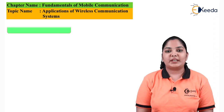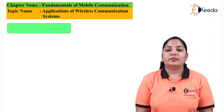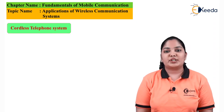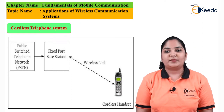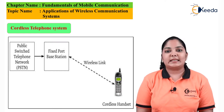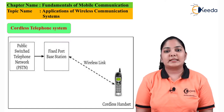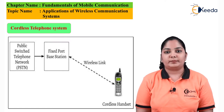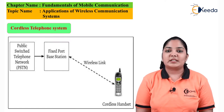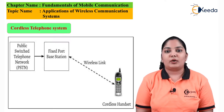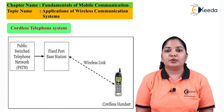The first application of the wireless communication system is cordless telephone system. As we can see in this diagram, there is a portable handset which is wirelessly connected to a base station. The base station is then connected to a PSTN or public switch telephone network.